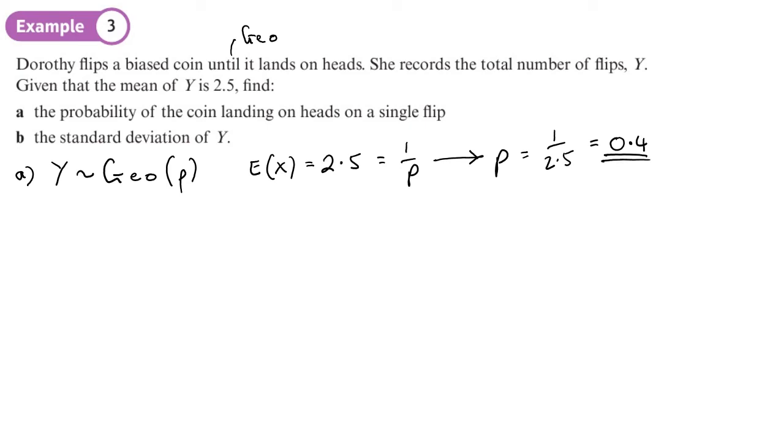If you do, I'd go back and check your working—you've done something wrong. Well, if we want to find the standard deviation, we're going to have to find Var(X) and then find the square root of Var(X). Now, Var(X) is equal to 1 minus p, so that's going to be 1 minus 0.4...